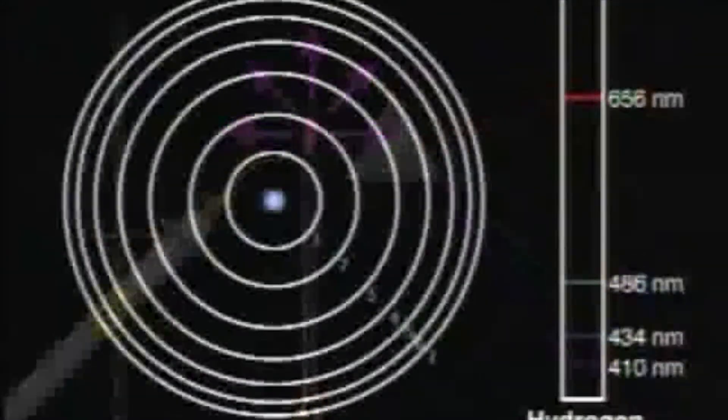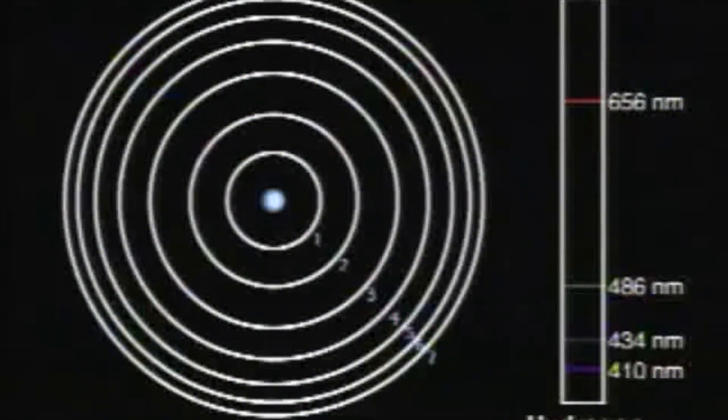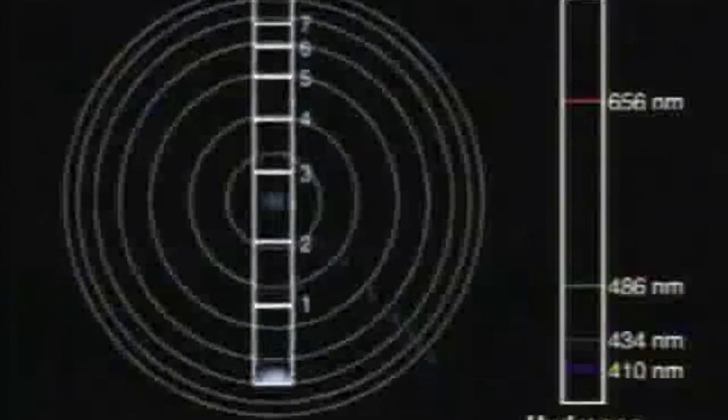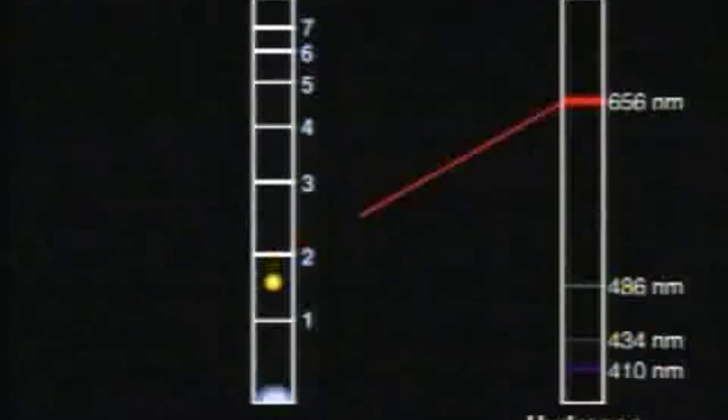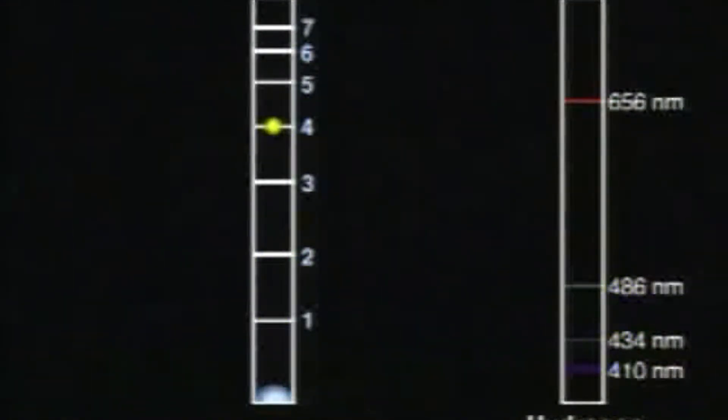A cross-section of an atom shows the energy levels similar to the rungs of a ladder. When energized, the electrons move temporarily to higher energy levels. As the electrons fall back to lower energy levels, they lose energy in the form of light, which produces the characteristic spectrum of the element.